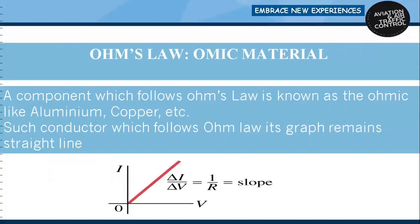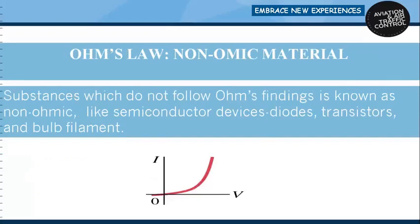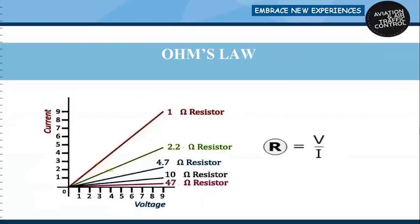An ohmic material is a component which follows Ohm's Law — for example, aluminium and copper. Such conductors have a straight-line voltage-current graph. Non-ohmic materials are substances which do not follow Ohm's Law — examples include semiconductor devices like diodes, transistors, and bulb filaments, whose voltage-current graph is curved. A line inclined more towards the voltage axis has higher resistance, and as the line shifts towards the current axis, the resistance drops.